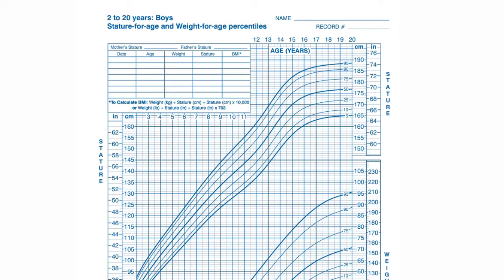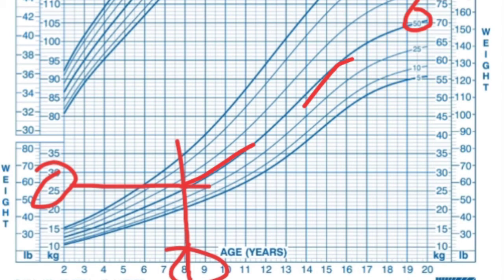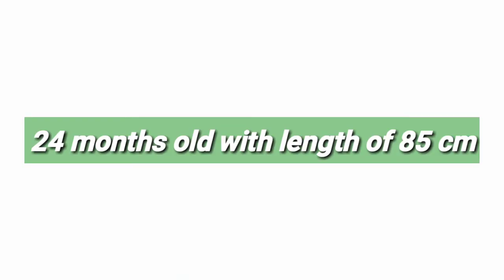The next chart shows stature-for-age, that is height-for-age. The child's age is 8 years and height is 120 cm. We mark the age on the x-axis and the height on the y-axis, combine them, and it falls on the 10th centile. For weight-for-age: the child's age is 8 years and weight is 25 kg. Marking both values and following the centile lines, it falls on the 50th centile.